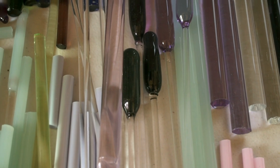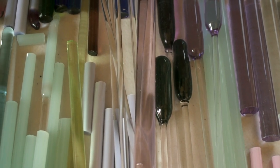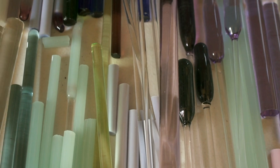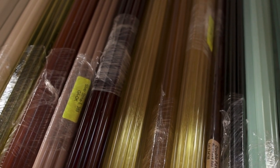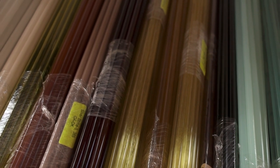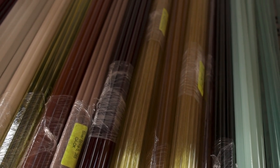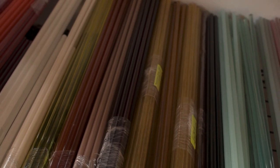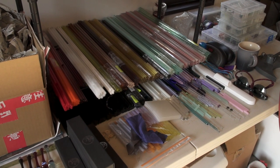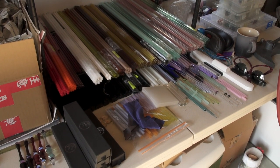Lucas works with borosilicate glass, and in his studio are just rods of it lined up everywhere. Borosilicate glass, as opposed to soft glass, is worked at a higher temperature. And it is also more resistant to temperature changes, so when Lucas is working the glass, he can set it down without having to worry about it breaking.